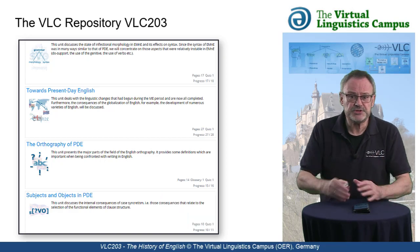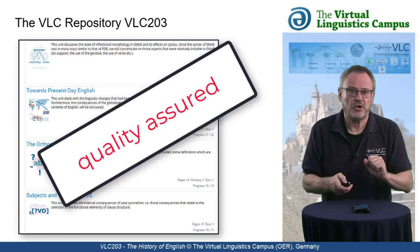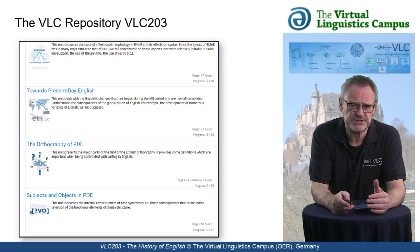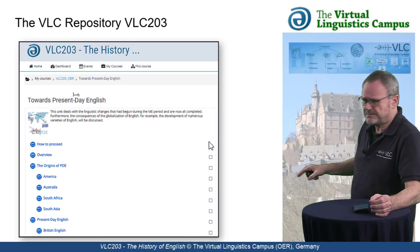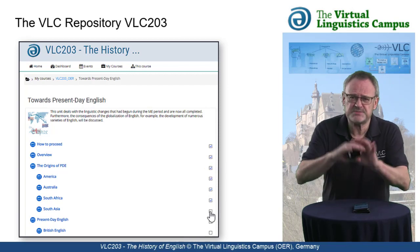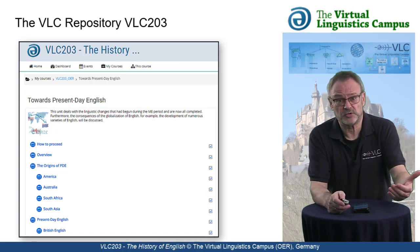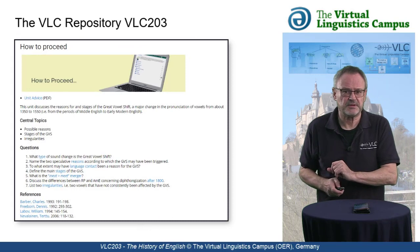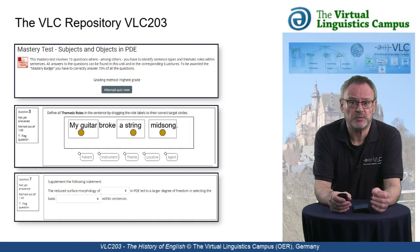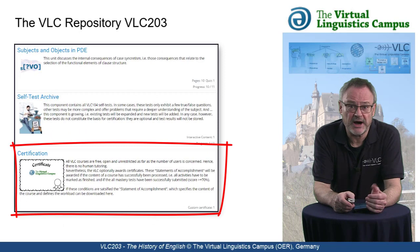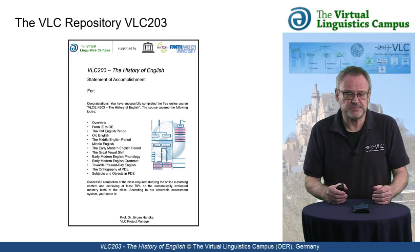This list of units is being updated and quality assured on a regular basis. And our teaching and learning concept? Well, studying online on the Virtual Linguistics Campus simply means go through each unit at your own pace, tick off an activity you have worked through and make use of as many VLC options as possible. And if you don't know what to do first, use the how-to-proceed options at the beginning of each content section. Each unit should be finished with a mastery test where you can earn your personal topic-related VLC badge, and at the end, if your score is 70% or higher, you will be awarded the Statement of Accomplishment Certificate.